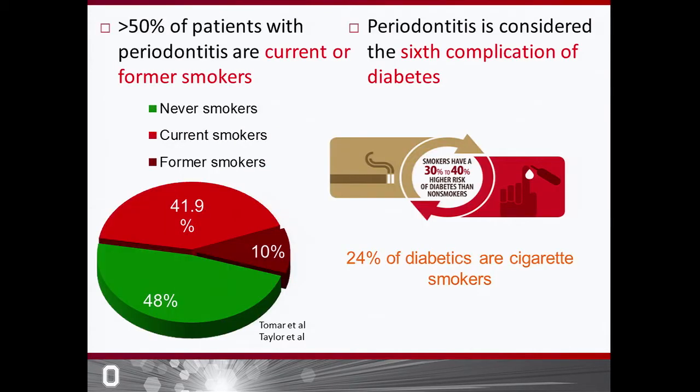Greater than 50% of patients with periodontitis are either current or former smokers, and periodontitis is even considered the sixth complication of diabetes. There's also an interesting fact: 24% of diabetics are cigarette smokers, and smoking also increases the risk for getting diabetes by 30% to 40%. So we have smoking and diabetes, and there's an intersection there that we need to look into.